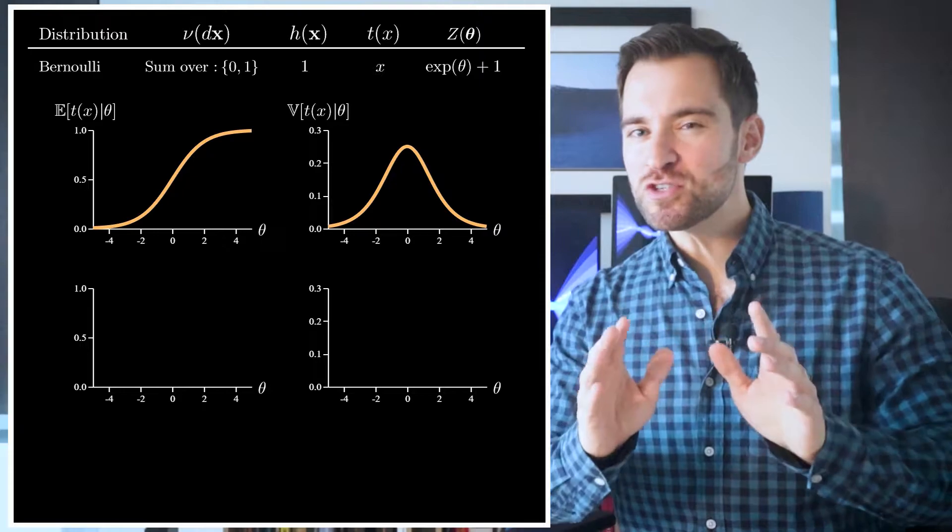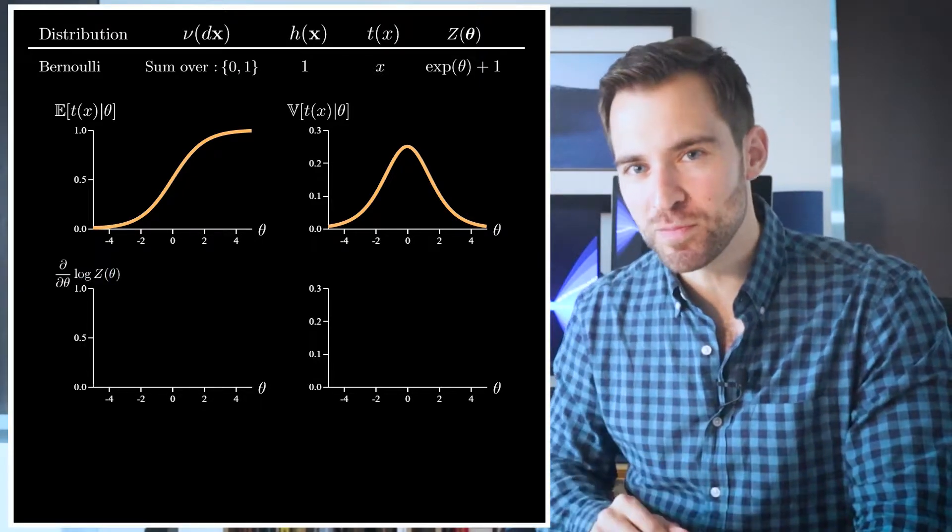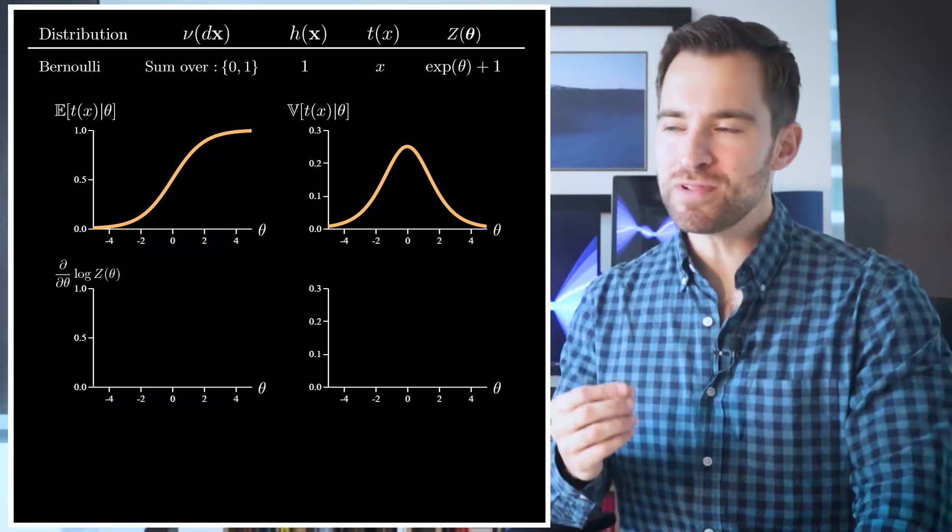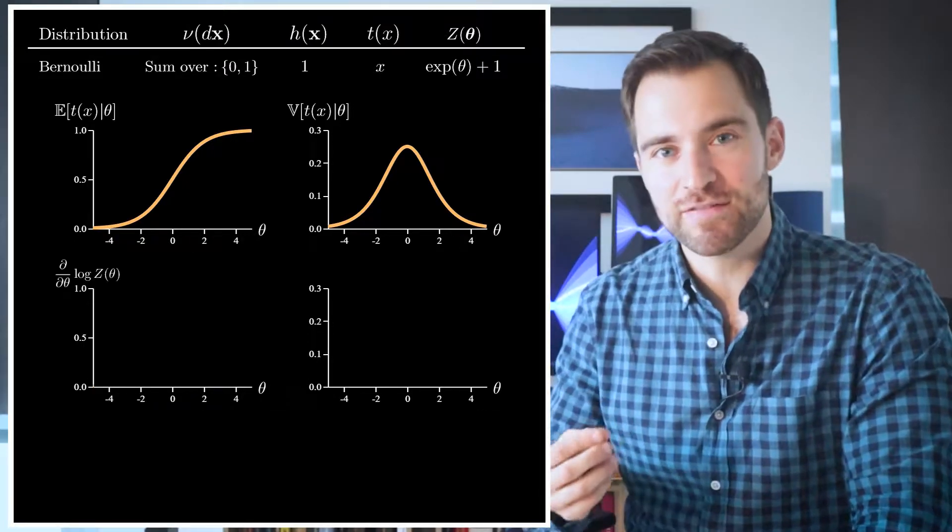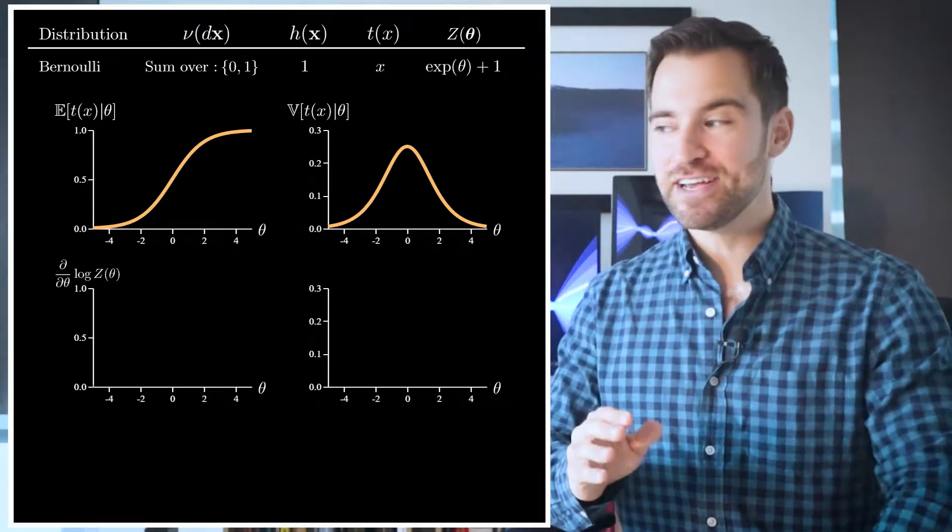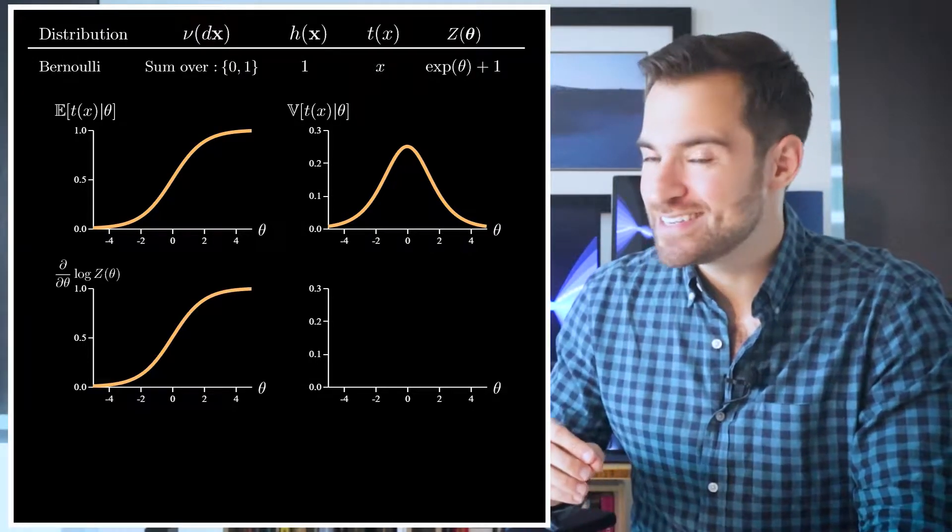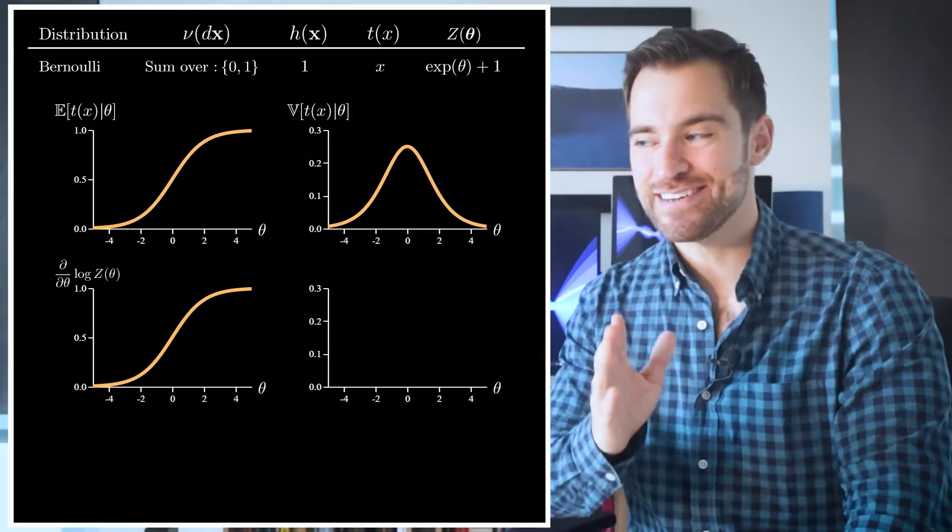Well, on the bottom left, let's also plot the derivative of the log normalizer. That is, the normalizer is a function of θ. So we're free to inspect the derivative of the log of that thing. Well, you get a function like this. Aha! Interesting. They are the same.